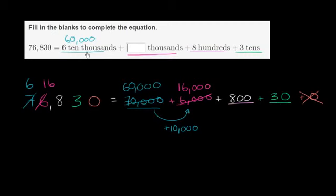So now what we wrote here looks just like what they wrote up here. This is 6 ten thousands plus 16 thousands plus 8 hundreds plus 3 tens. And we're done.